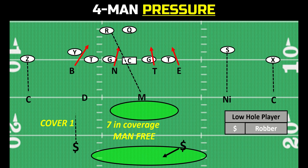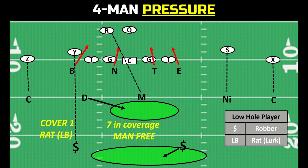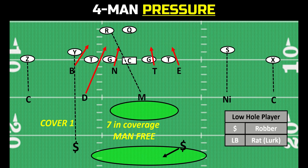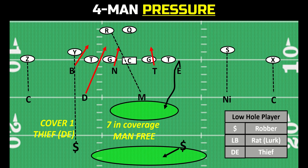When a linebacker plays the low hole, he is called a rat, oftentimes also called a lurker. So: a safety playing the low hole is a robber, a linebacker playing the low hole is a rat. And then sometimes you'll blitz a defender and drop a defensive end to play the low hole — he is then called a thief. Safety in the low hole: robber. Linebacker in the low hole: rat. Defensive end in the low hole: thief.